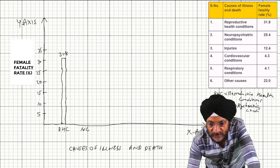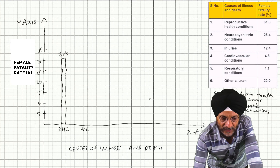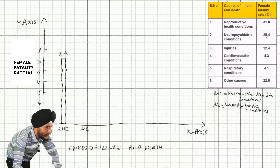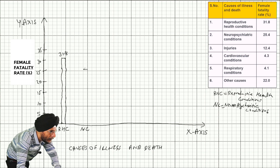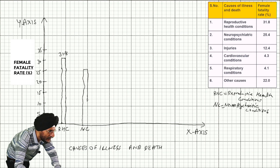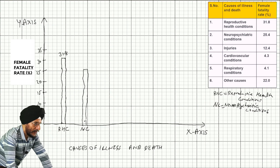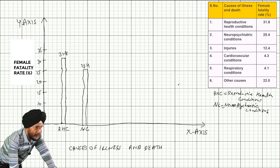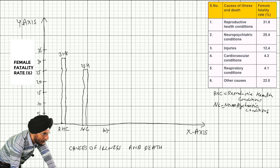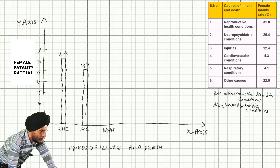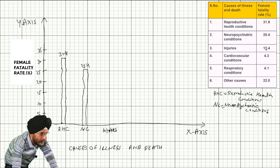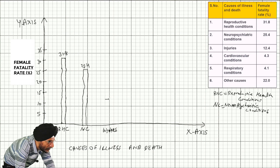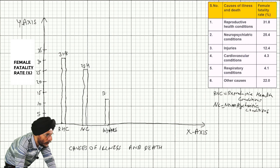Otherwise the teacher in the exam may cut the marks. The value for neuropsychiatric conditions is 25.4. In the exam you can adjust the answer sheet accordingly, but here we are not able to draw the lines in a straight line. Next are injuries — as we have mentioned 'injuries' properly there is no need to write in short words. Injuries are at 12.4; you have to take approximation. Ensure the terms to draw the lines — 12.4.